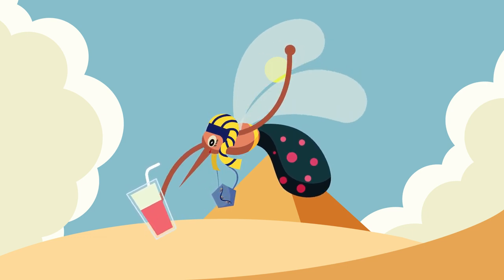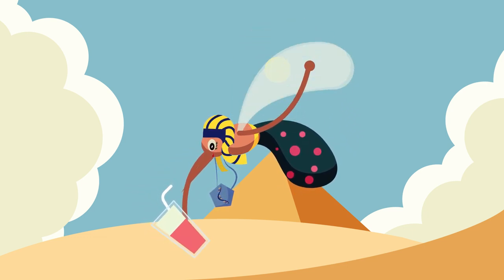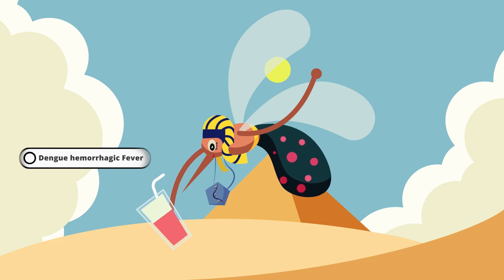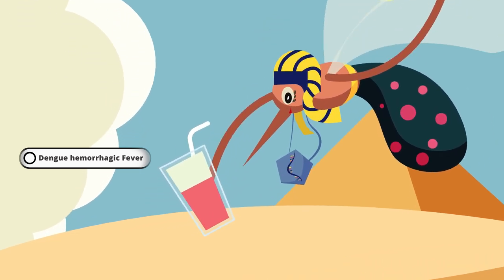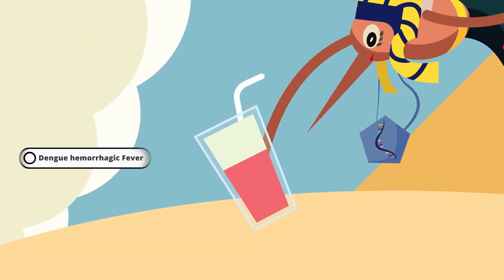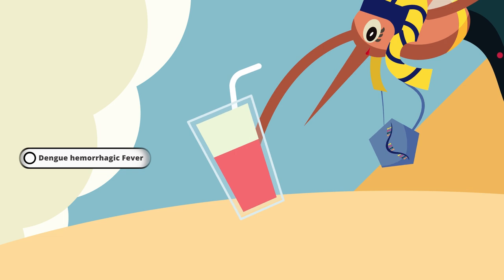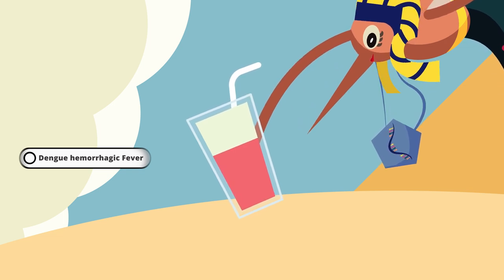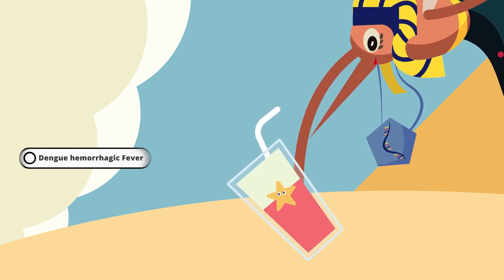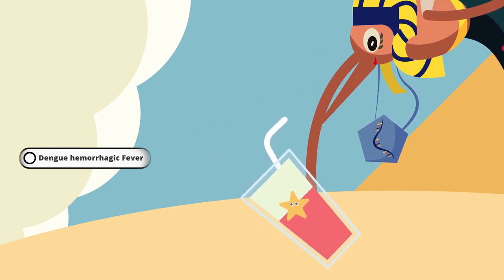The mosquito is drinking blood from a cup, which will demonstrate the triad of dengue hemorrhagic fever. The drink is arranged in two layers — plasma and cells — and there's a starfish in the blood. The starfish looks like a platelet to me.